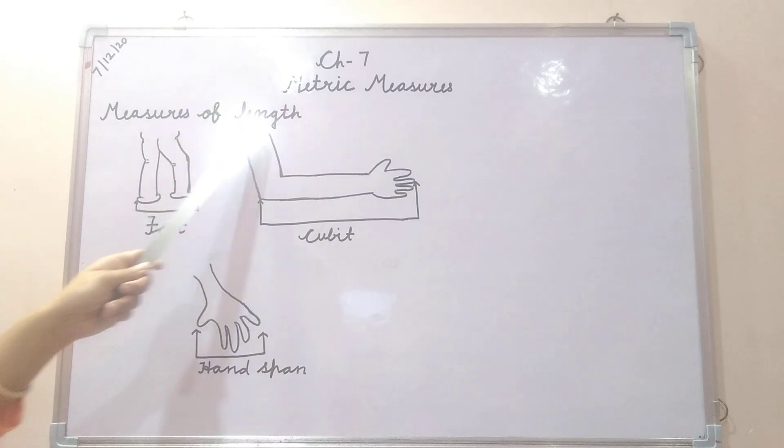Measures of length. Okay children, children before starting this, first you should know what is length. The word length is used to measure how long an object is. That means कोई चीज इतनी लंबी है. That is called length.